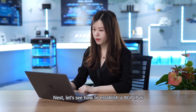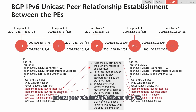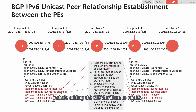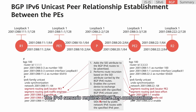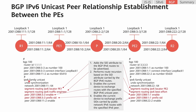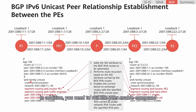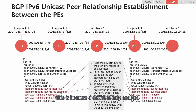Next, let's see how to establish a BGP IPv6 unicast peer relationship between the PEs. Similar to those in the IPv4 scenario, the key configuration steps include adding the SID attributes to routes, configuring route recursion to SRv6 TE policies, and enabling the current device to exchange routes with the specified BGP IPv6 unicast peer. The IPv6 scenario requires these key configurations to be performed in the BGP IPv6 unicast address family. In the IPv4 scenario, however, the corresponding configurations need to be performed in the BGP IPv4 unicast address family. In addition, you need to run the peer enable command during BGP IPv6 unicast peer configuration, because a device is only enabled to exchange routes with IPv4 unicast peers by default.